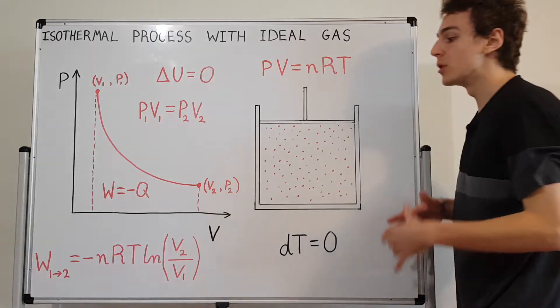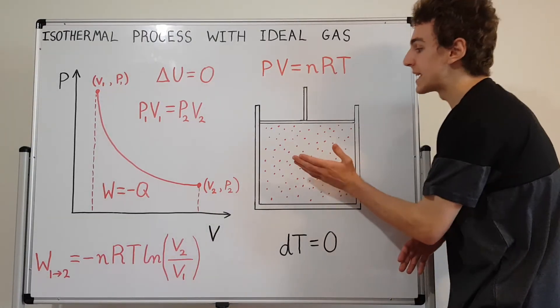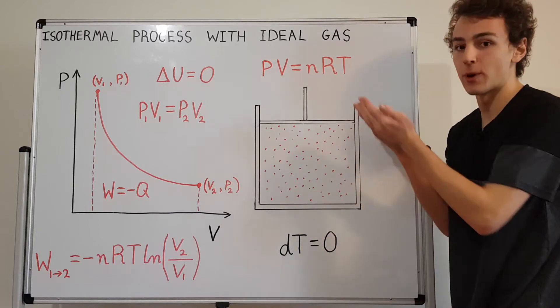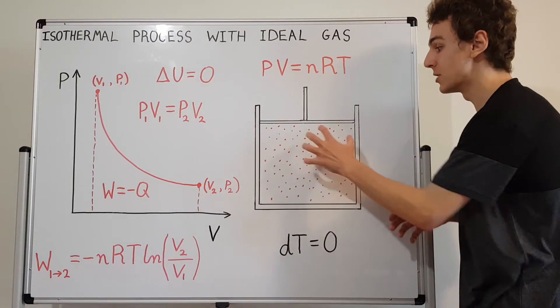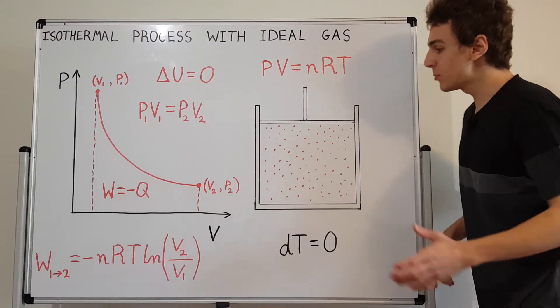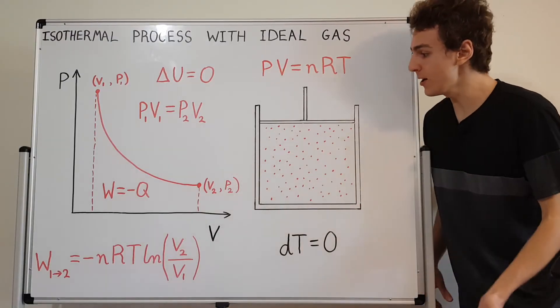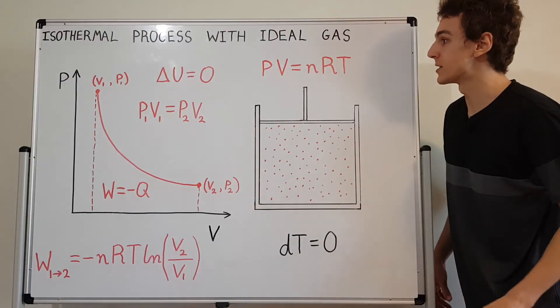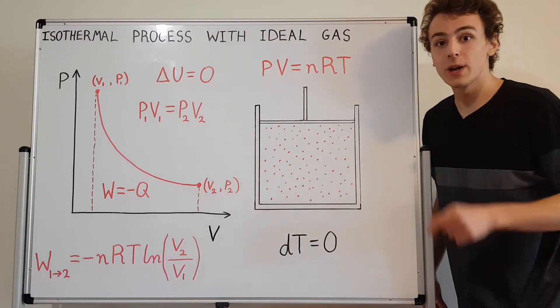Why is it negative? Well, it's because we're losing energy. When we expand, the gas loses energy, because it does work on the surroundings. So it's giving some of its internal energy up to the surroundings. But if it was just giving up its internal energy to the surroundings, then its internal energy would decrease, and its temperature would decrease. But that's not allowed.